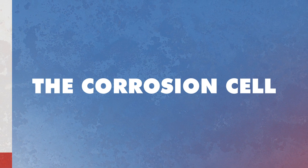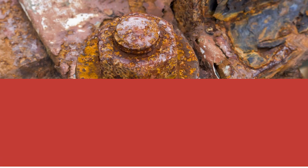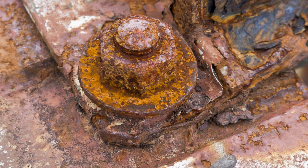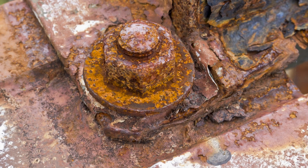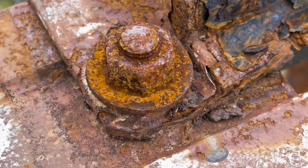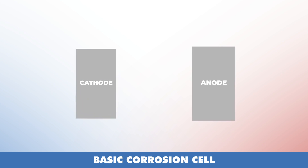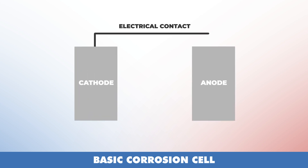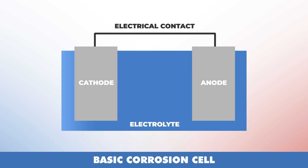The corrosion cell. For serious corrosion to happen to a piece of steel, it must be part of a corrosion cell. A corrosion cell has four parts: an anode, a cathode, an electrical contact between them, and an electrolyte.